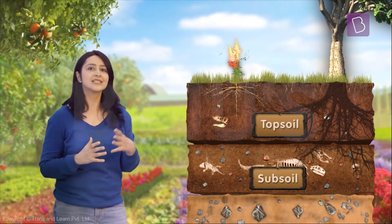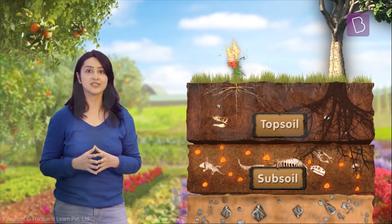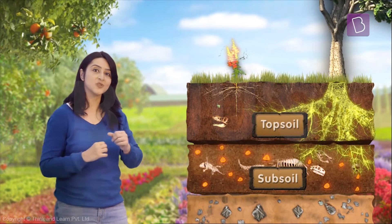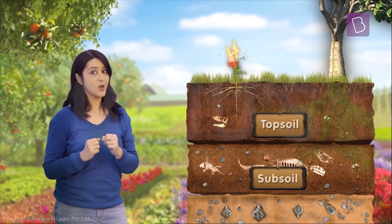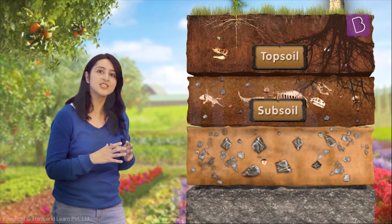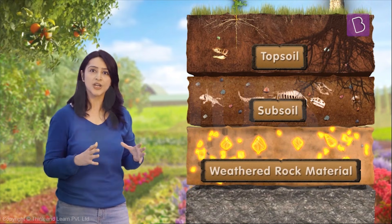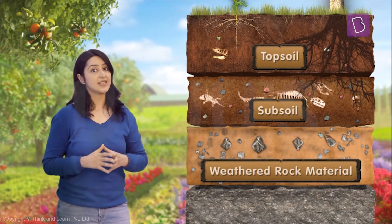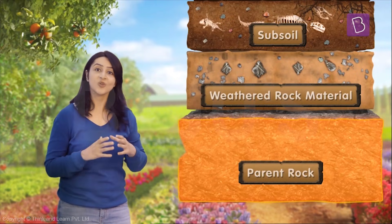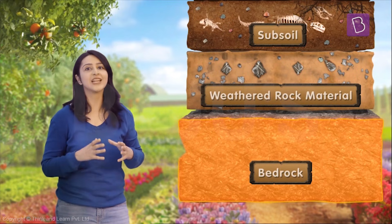Below the topsoil is the subsoil. This part of the soil is a mixture of sand, silt and clay. Now this layer is rich in minerals. Only the roots of large plants can reach the subsoil. Moving further down, we can see that the third layer consists of weathered rock material. This layer is devoid of any organic matter.